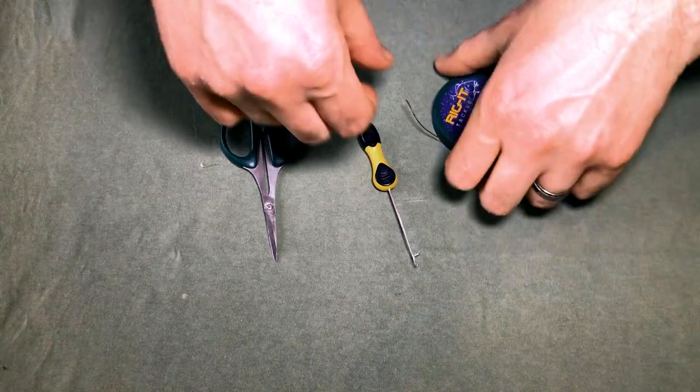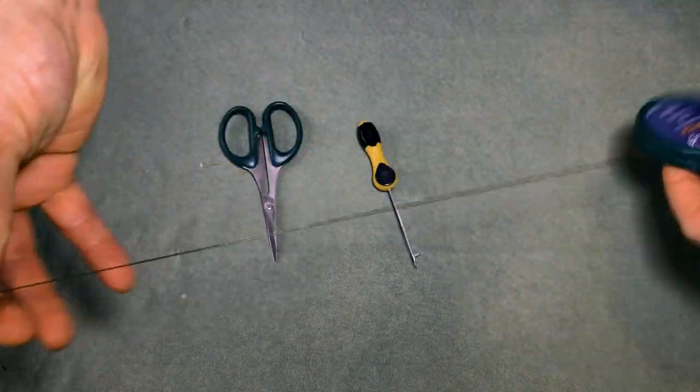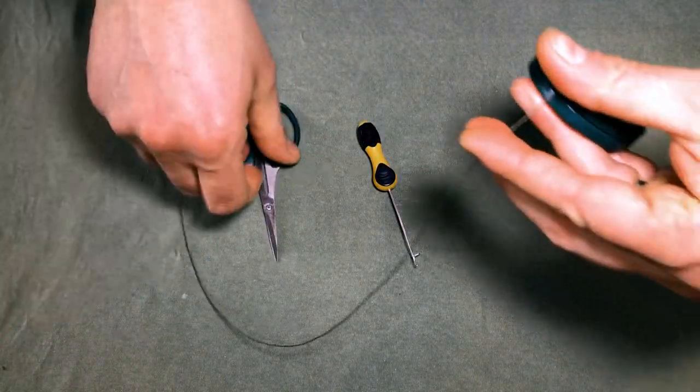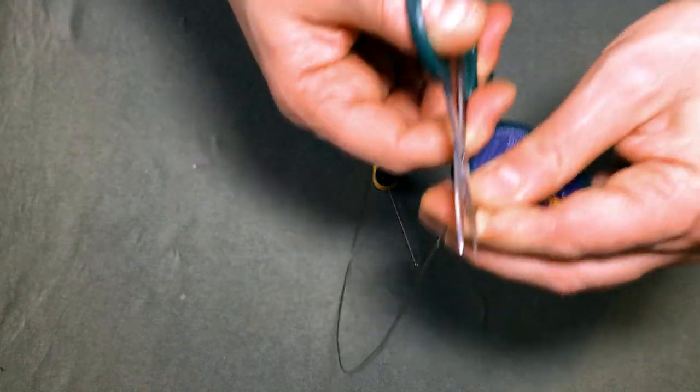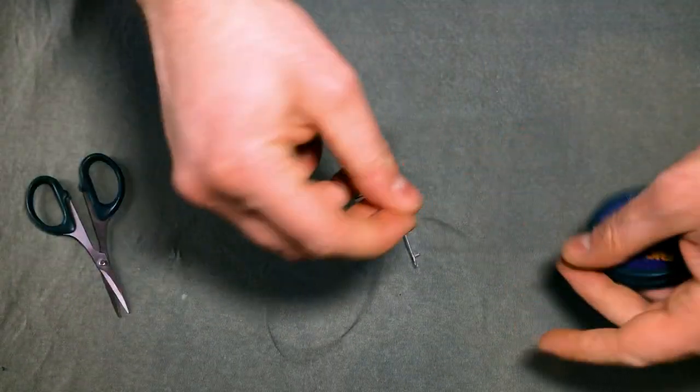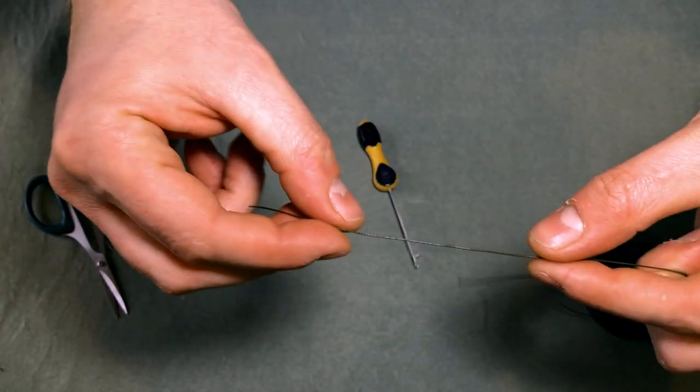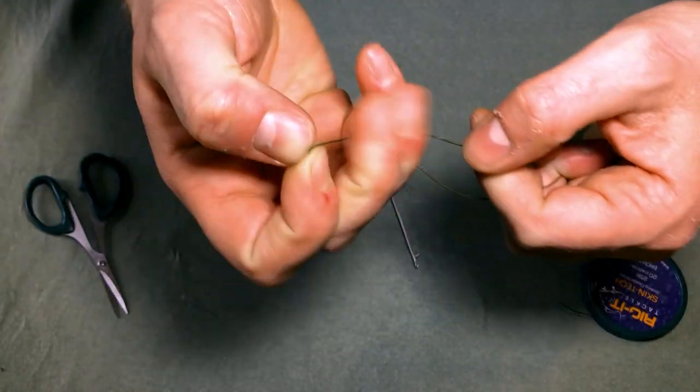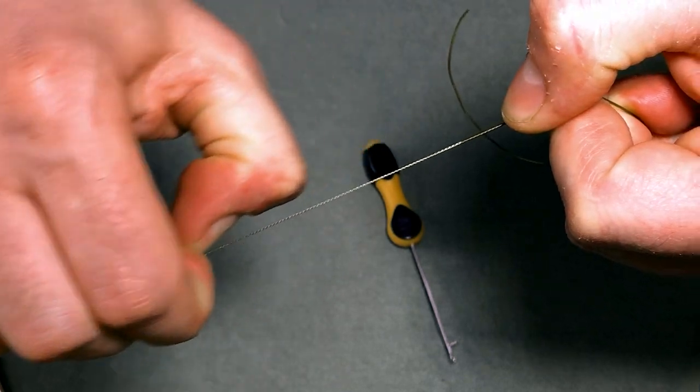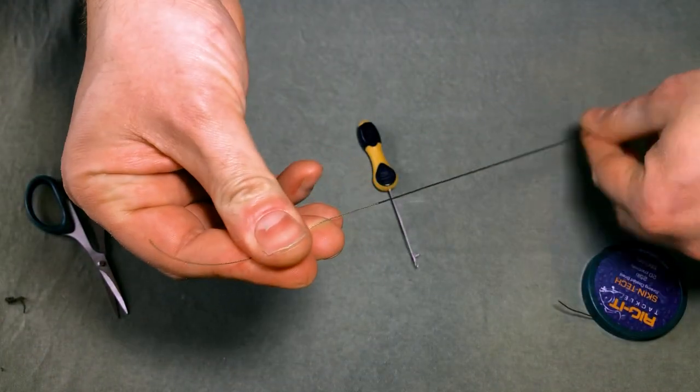So the first stage of making your hair rig is to take your braid and cut off about 10 to 12 inches of braid. At one end we'll be stripping some of the coating off to make your loop for your boilie stop to go through for mounting your hook bait. You can use boilies, nuts, sweet corn, pretty much any hook bait you like with this rig.